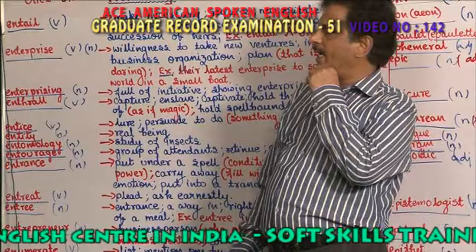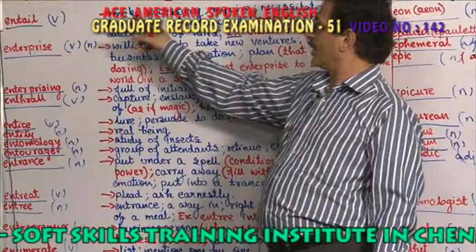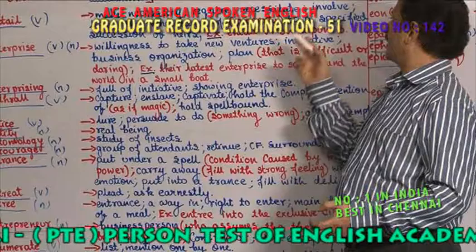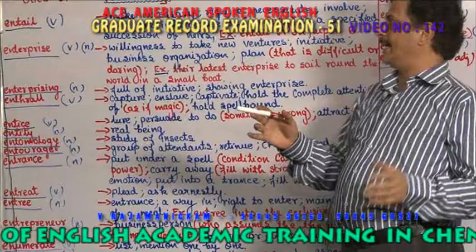What do you mean by entail? What part of speech does it belong to? Entail is a verb. It means make necessary arrangements. Entail means it requires, it is necessitate, it involves.